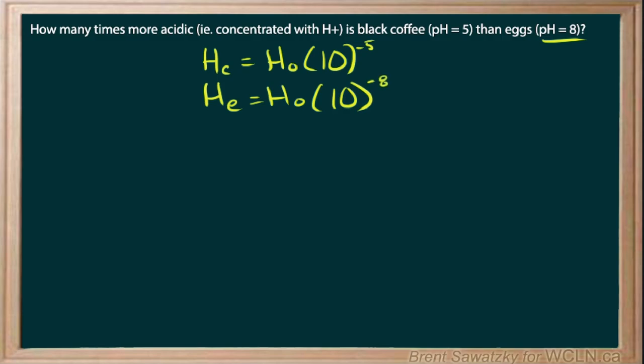We're asking how many times more acidic is the coffee than the eggs. The pH of the coffee is five and the eggs is eight. If we were to do the ratio and just leave them as positive, we might get confused because we would have a number less than one. So by throwing those negatives in there, it helps keep the ratios working out more reasonably.